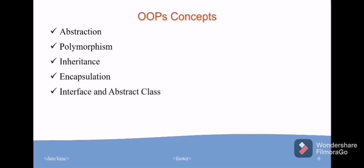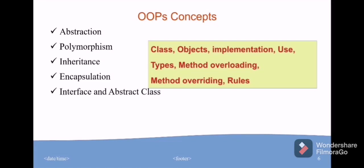Here check about class and objects, implementation of all these concepts, where it is used, types of them, mainly about method overloading and method overriding concepts and rules for them. After completing all these concepts, then you can check about association and composition.